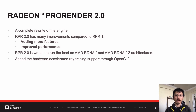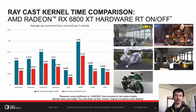A natural question you may have would be how much performance gain we can get using the hardware ray tracing. To evaluate the performance uplift, we rendered some scenes with and without hardware. We borrowed scenes from our partners. You can see rendered images of the scenes on the right in the slide. One scene is from ACA Software, who integrated RPR2 into their architectural modeling tool. Another one is from a Blender 3D scene, a junk shop, originally created for the internal rendering engine Cycles, but RPR2 has compatibility with Cycles, so we could use it for RPR2 performance tests as well.